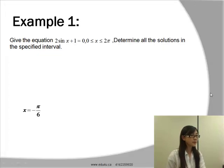We're going straight into example 1 from your learning resources. The question states that we have this equation, 2 sin x plus 1 equals 0, in the domain x is between 0 and 2π. We have to determine all the solutions in this specific interval.